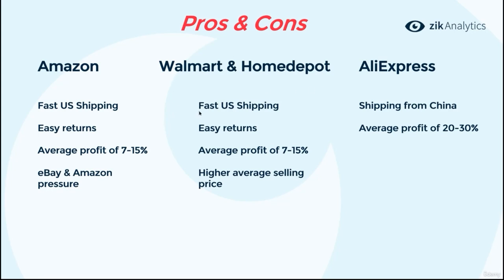For Walmart and Home Depot, you have fast U.S. shipping and easy returns — almost like Amazon, but a bit less. The average profit margins are similar. There is also a higher average selling price, so sellers who focus on high-ticket, expensive items typically work with Walmart and Home Depot, as they have a lot of expensive high-ticket products that sell well.